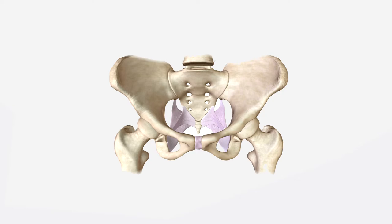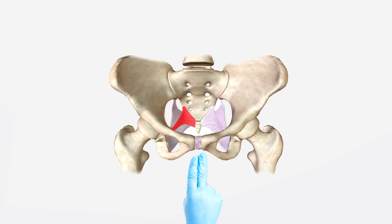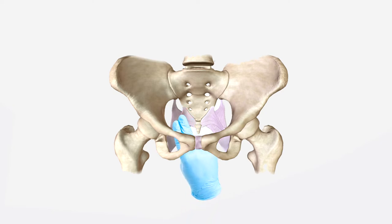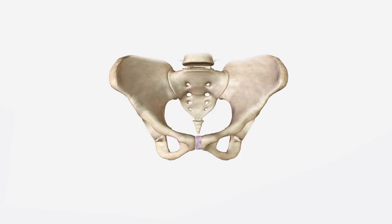Lastly, assess the width of the sacrosiatic notch. This is measured by placing your index and middle fingers over the sacrospinous ligament, which extends from the ischial spines towards the second and third segments of the sacrum. This is considered adequate when it accommodates more than two fingers' width.